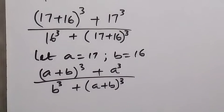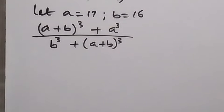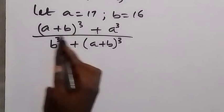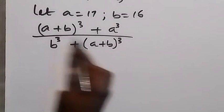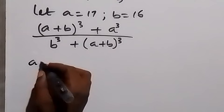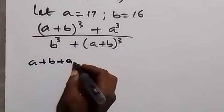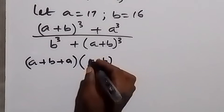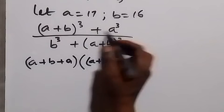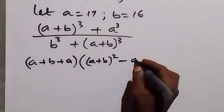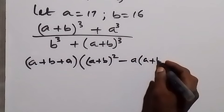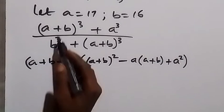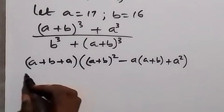And when we look at this, we have the identity sum of two cubes. When we apply that, we have in terms of x and y — if this is x and this is y — so we add the two together. Here we have a plus b plus a, then multiplied by a plus b squared, then minus a times a plus b, then plus a squared. So we have a plus b squared. We have written this sum of two cubes in another way.